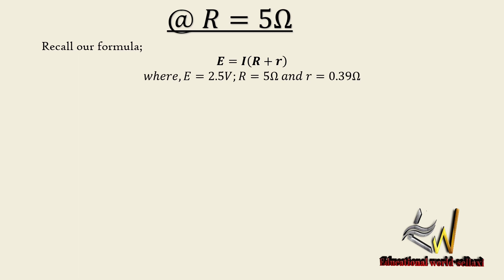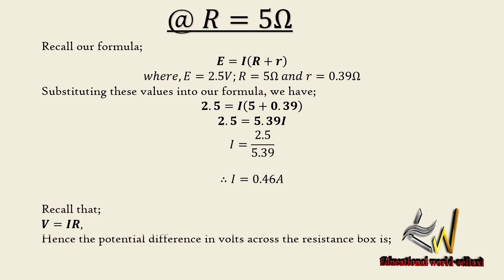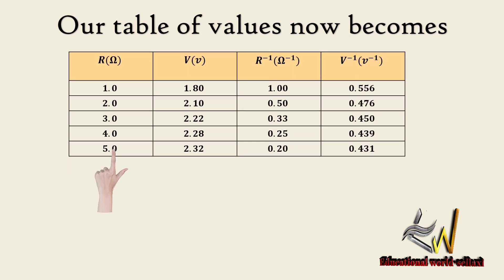When the resistance box is set to 5 ohms, substituting into the equation gives 2.5 = I(5 + 0.39), and simplifying gives current = 0.46 amperes. The voltage drop is V = 0.46 × 5 = 2.32 volts. Table entry: R = 5.0 ohms, V = 2.32 volts, 1/R = 0.20 per ohm, 1/V = 0.431 per volt.